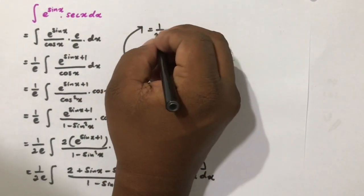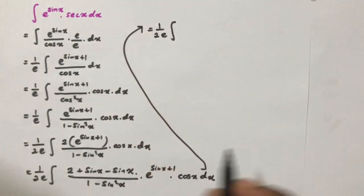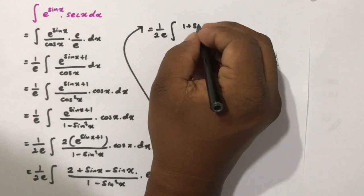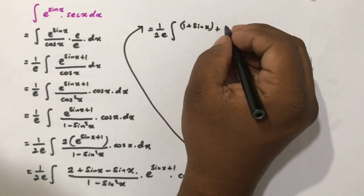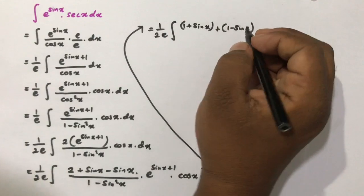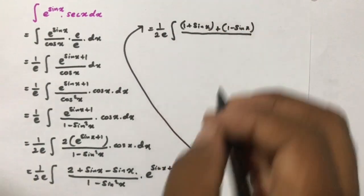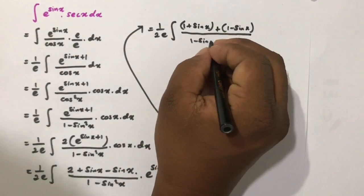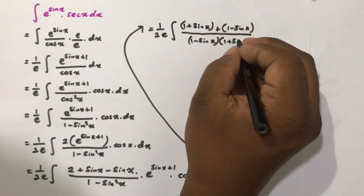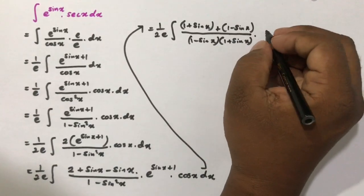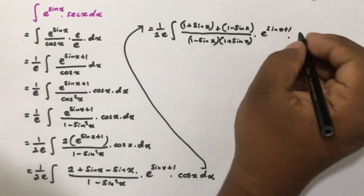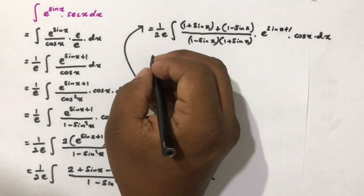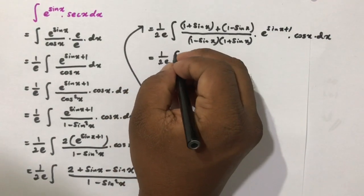This equals 1 over 2 times e times the integral where I re-add the numerator as (1 plus sine of x) plus (1 minus sine of x), over the denominator 1 minus sine squared of x, which is a difference of two squares and can be written as 1 minus sine of x times 1 plus sine of x, multiplied by e to the sine of x plus 1 times cosine of x dx.